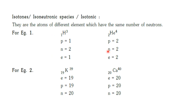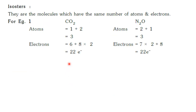So we say that pair of atoms are called isodiaphers. Isotones are the atoms of different elements having the same number of neutrons. For example, hydrogen-3 (atomic number 1) and helium-4 (atomic number 2) both have 2 neutrons, so we call them isotones.